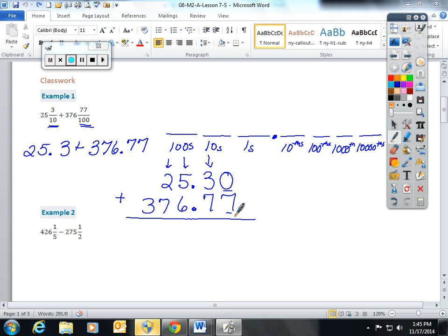Both of these numbers are in the hundredths. When we add these two numbers together, the answer is 402 and 7/100. This one was fairly easy because the denominators were both powers of 10.